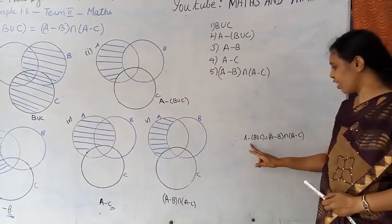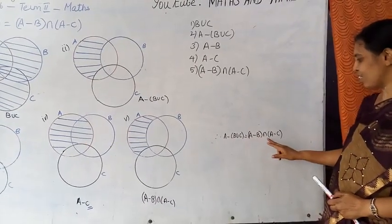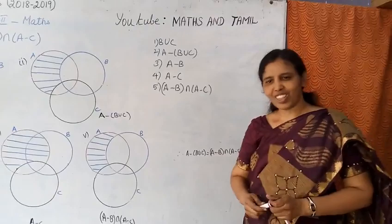Therefore, A difference B union C equal to A difference B intersection A difference C. Okay students.